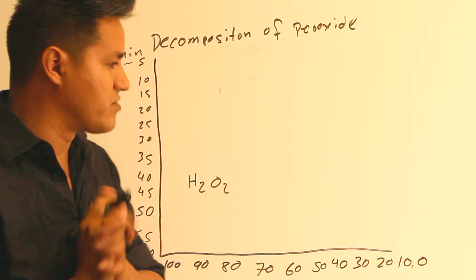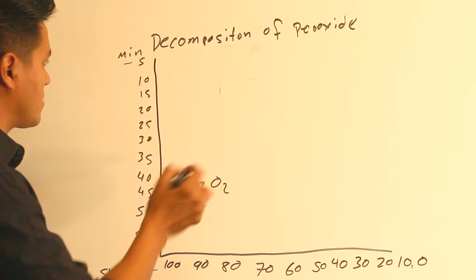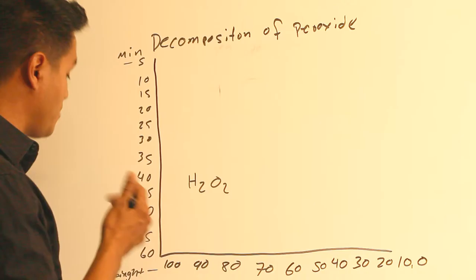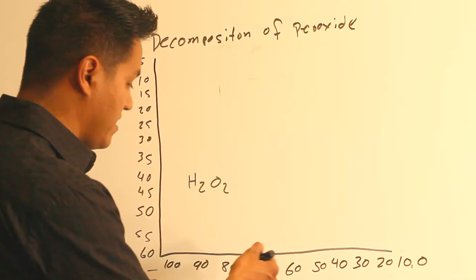All right guys, so we are back with the composition of the peroxide. Basically what I have right here in this graphic, we have the minutes: 5, 10, 15, 20, 25, 30, 35, 40, all the way to 60 minutes, between 5 and 60.